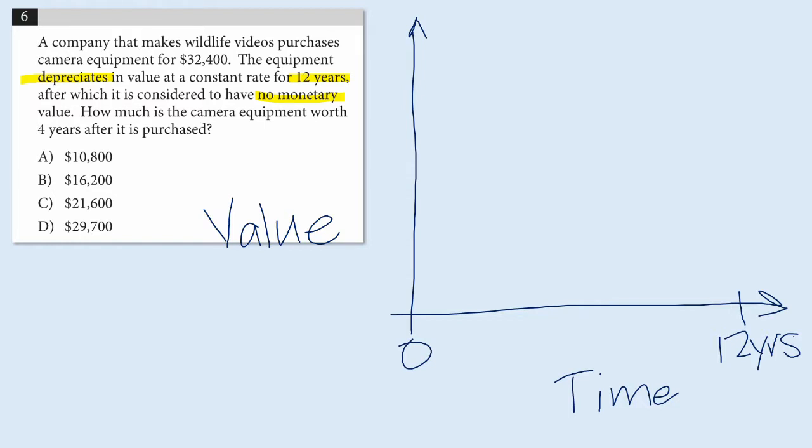And we know that the equipment will start out at a value of $32,400. So at time zero, which is the day the equipment was bought, it has its full value. It's worth $32,400.